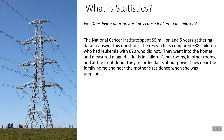The researchers compared 638 children who had leukemia with 620 who did not. They went into the homes and measured magnetic fields in children's bedrooms and in other rooms, at the front door. They recorded facts about power lines near the family home and near the mother's residence when she was pregnant. This was basically the anti-vaxxer movement of my time when I was growing up.